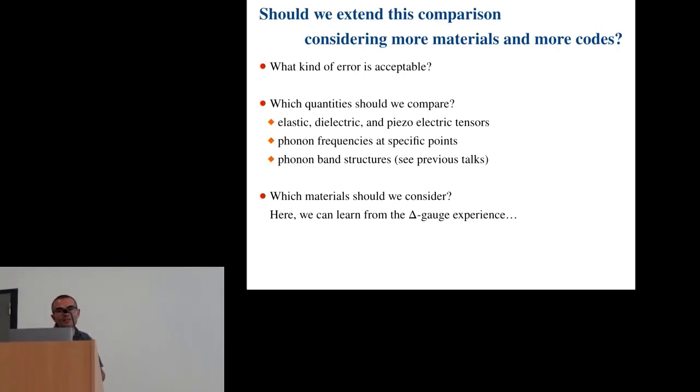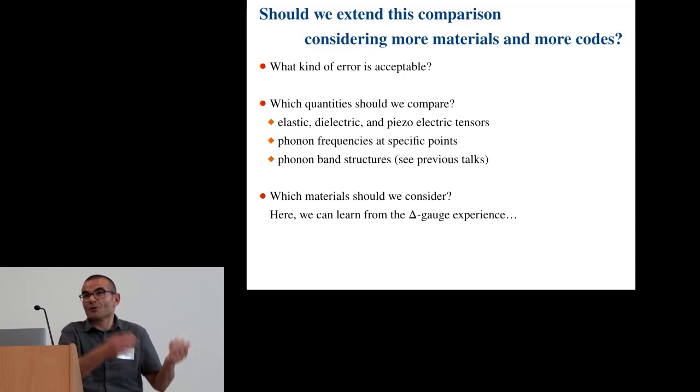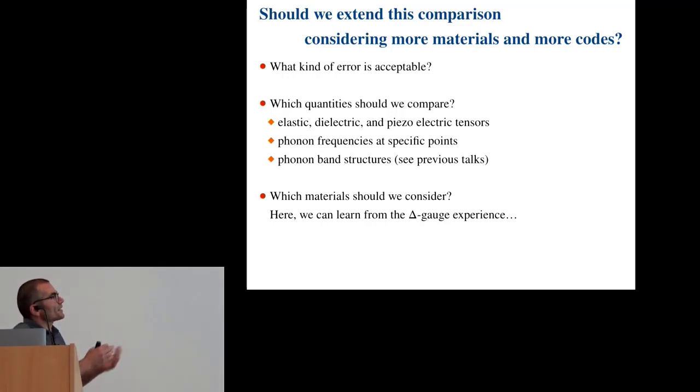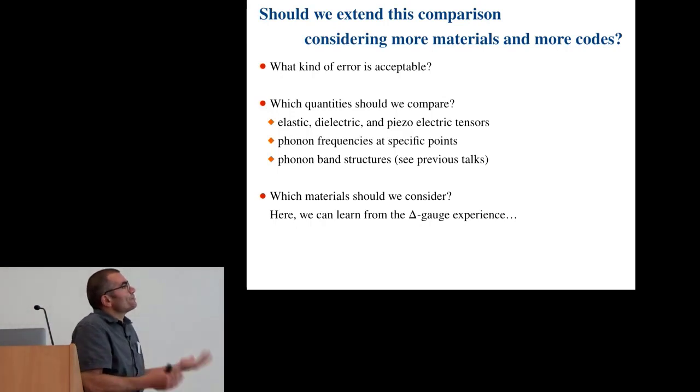So which are the quantities that we should compare? Should we look at the macroscopic results like elastic, dielectric, piezoelectric tensors, should we look at phonon frequencies, phonon frequencies at specific points, say gamma, which is maybe too symmetric, maybe a zone boundary point? Should we look at the phonon band structure and use something like the delta band that you are using for the band structure of the electrons? Or something that like was introduced by Antimo and Gianluca in the work that Nicola was mentioning there? So should we do something like that? And then which material should we consider? Well, we can learn here from the delta gauge experience.